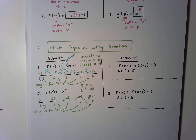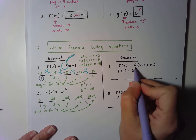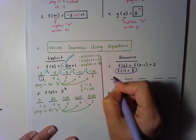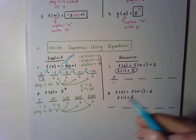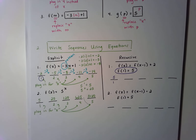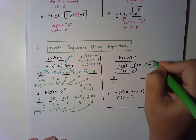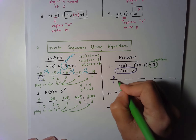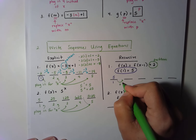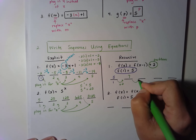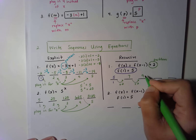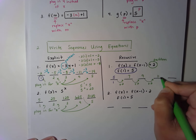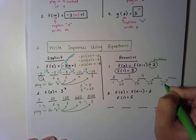If it's recursive, there's a different way to do it. Recursive equations are always going to tell you the starting value — so I know term number 1 has a value of 5. Recursive equations also always tell you the pattern. So rather than plugging in numbers, I'm just going to keep using the pattern. If I add 2, I get 7. If I add 2 again, I get 9. If I add 2 again, I get 11. And if I add 2 again, I get 13.